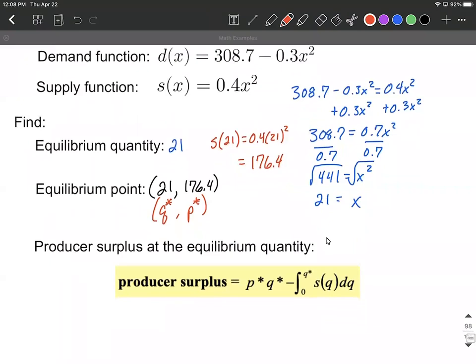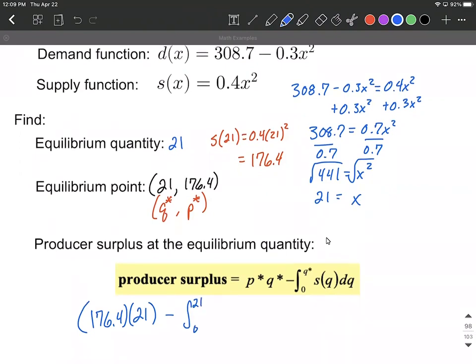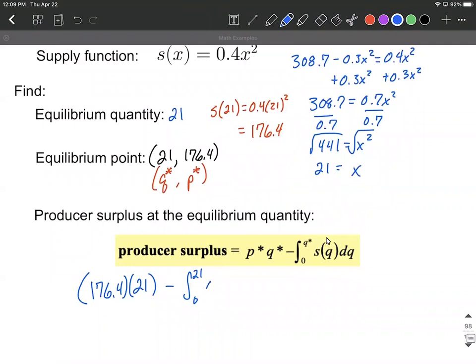Next up, let's plug into the producer surplus formula. So this formula is gonna go P star, 176.4, multiplied by 21 Q star, minus the integral from zero to Q star, again 21 in this case, and then we want to copy down the supply function: 0.4x squared dx.